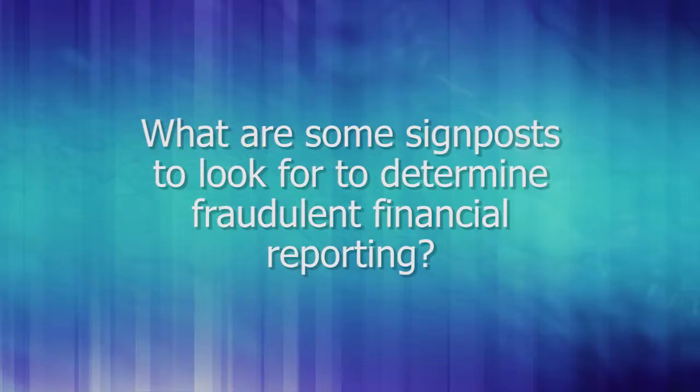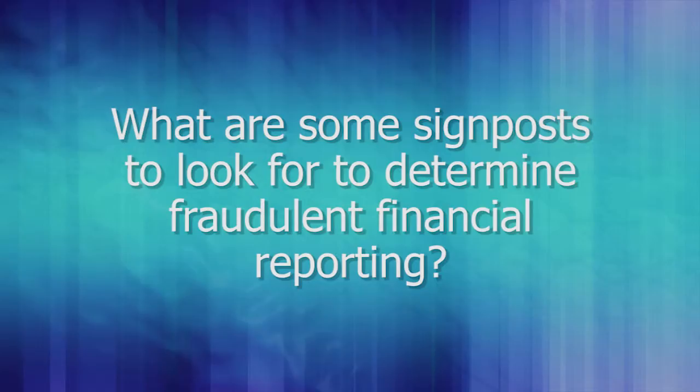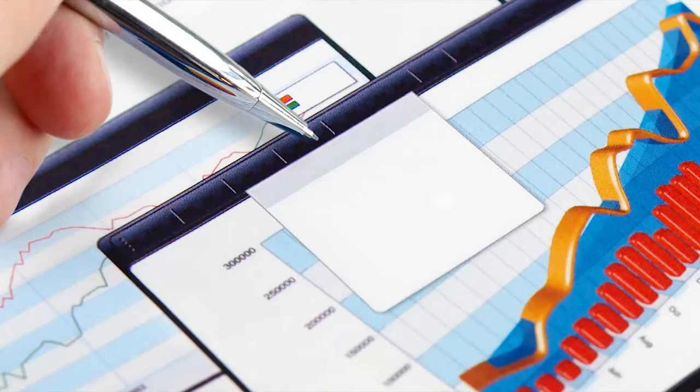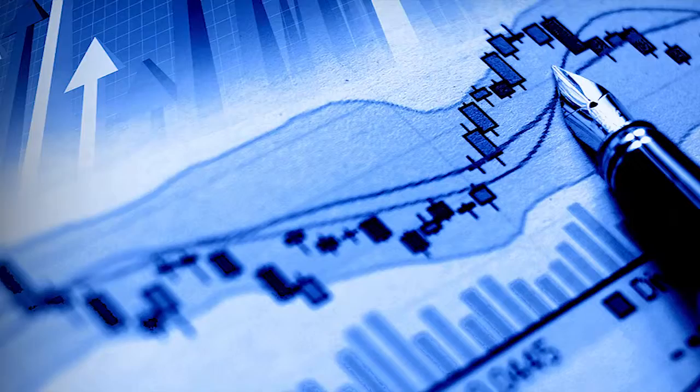Your financial records and documents are often the places where fraudulent activity is covered up. What are some items to look for to determine fraudulent financial reporting? Of the three types of occupational fraud, it's not corruption or asset misappropriation, but fraudulent financial statements that have the potential to cause the greatest impact.